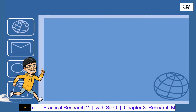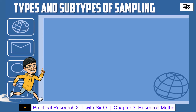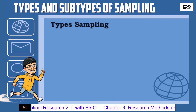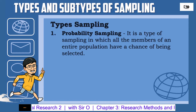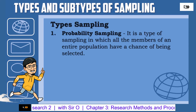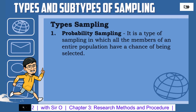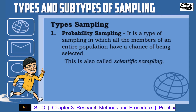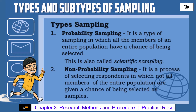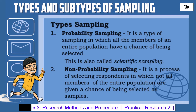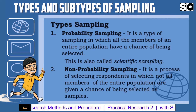Types and Subtypes of Sampling. 1. Probability Sampling — a type of sampling in which all the members of the entire population have a chance of being selected. This is also called scientific sampling. 2. Non-probability Sampling — a process of selecting respondents in which not all the members of the entire population are given a chance of being selected as samples.